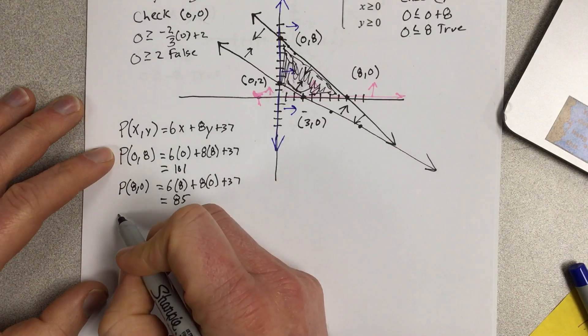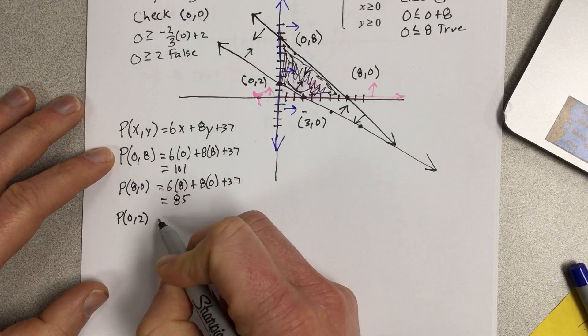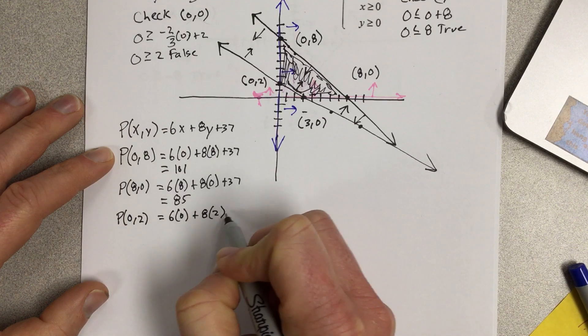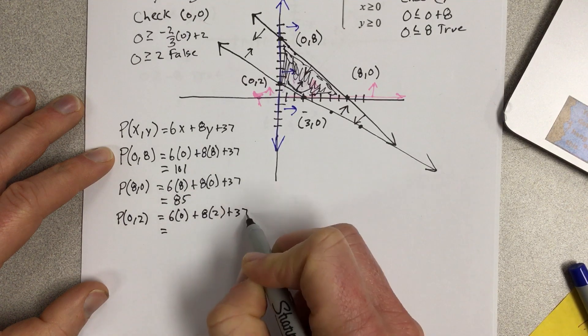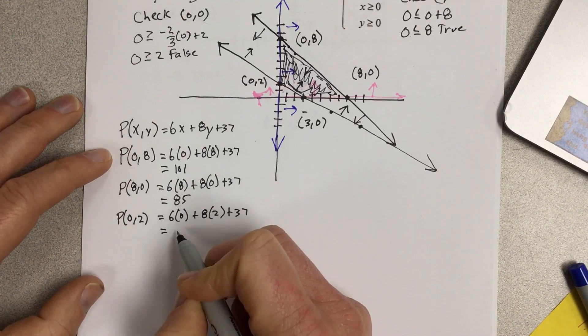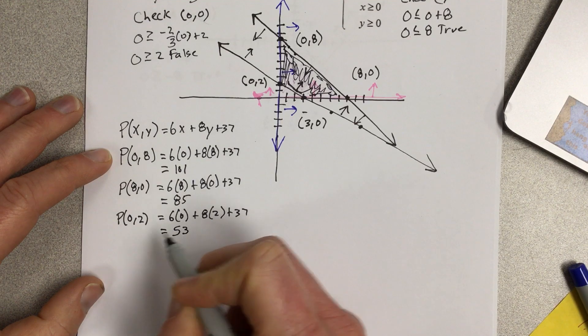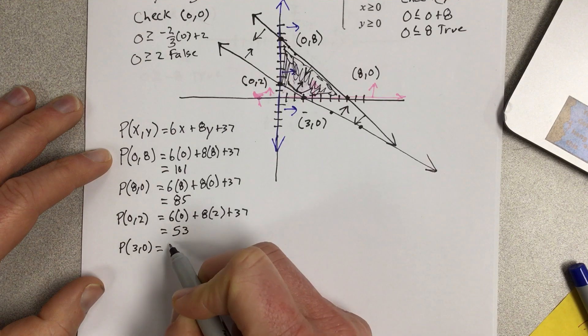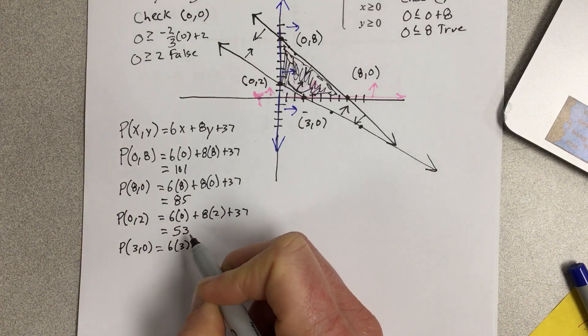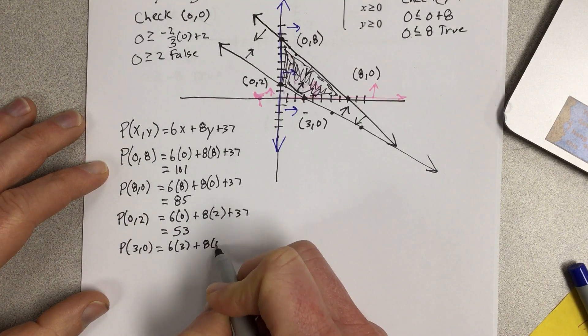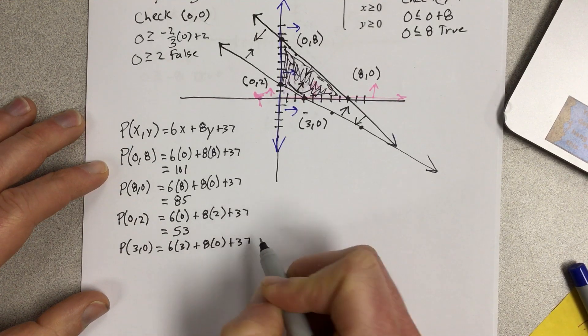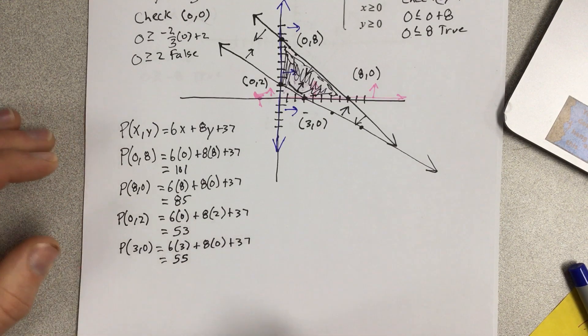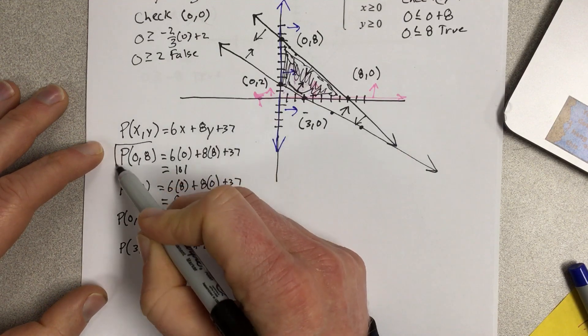We're going to plug in 0, 2. So P of 0, 2, 6 times 0 plus 8 times 2 plus 37. You can see that's going to be smaller, 37 and 16 would be 53. And then P of 3, 0, that'd be 6 times 3 plus 8 times 0 plus 37, which is 18 plus 37, that'd be 55. So our maximum would be this 0, 8 coordinate right here.